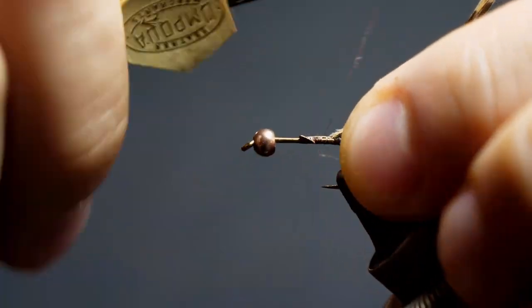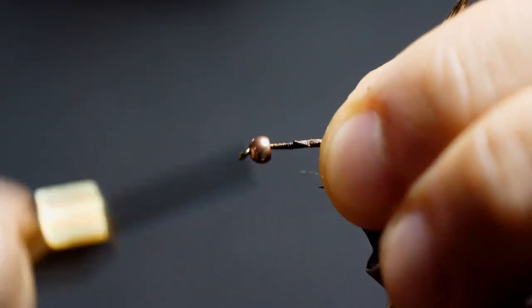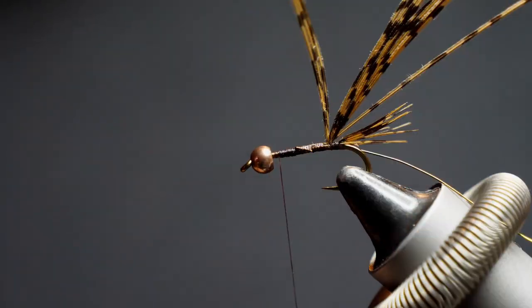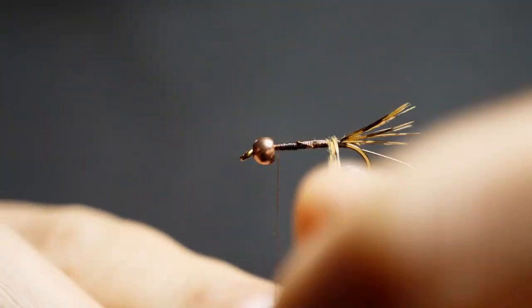When you wrap something like marabou or pheasant fibers over the hook, whatever is laying underneath, it's going to conform to that shape. So I'm using the wire here to build up a bit of a base. I'm also using the thread to build up that same taper.